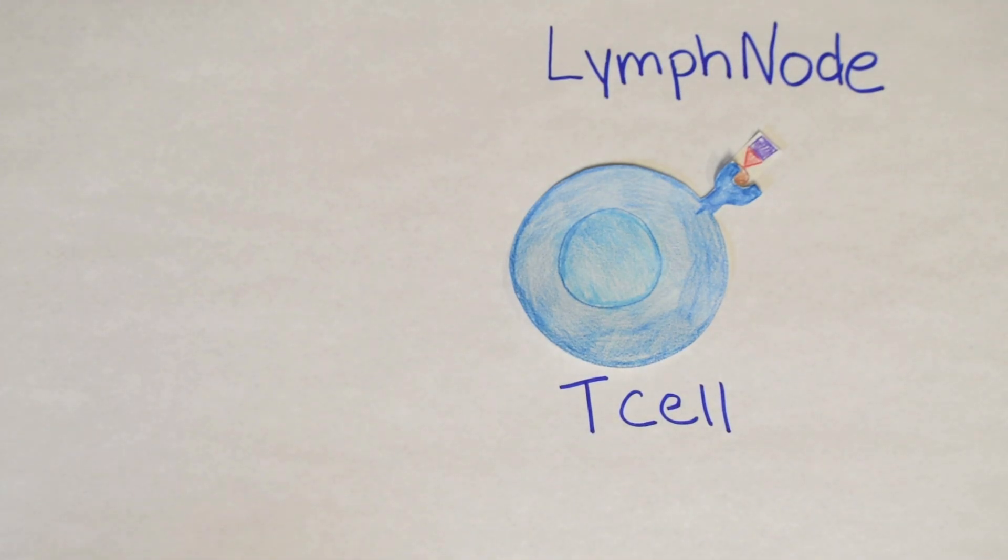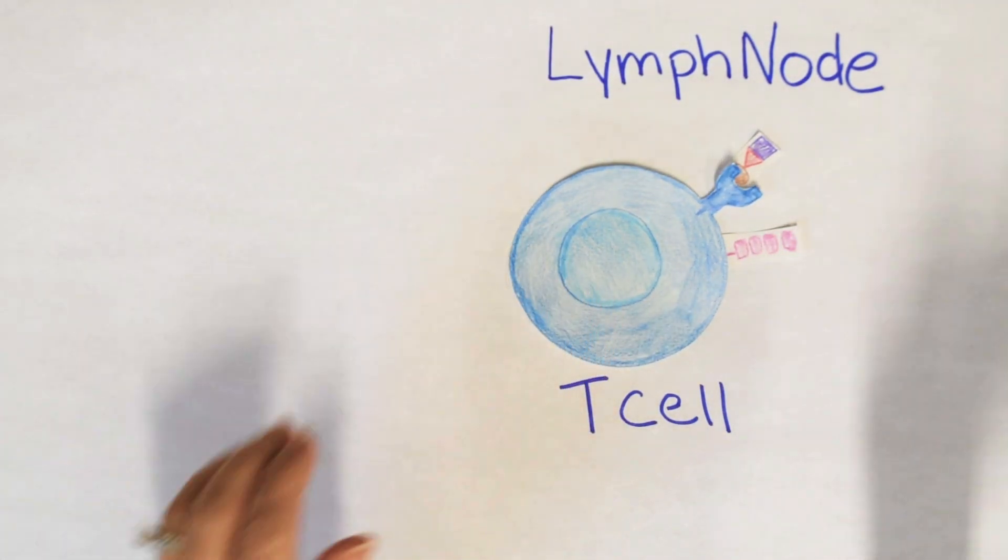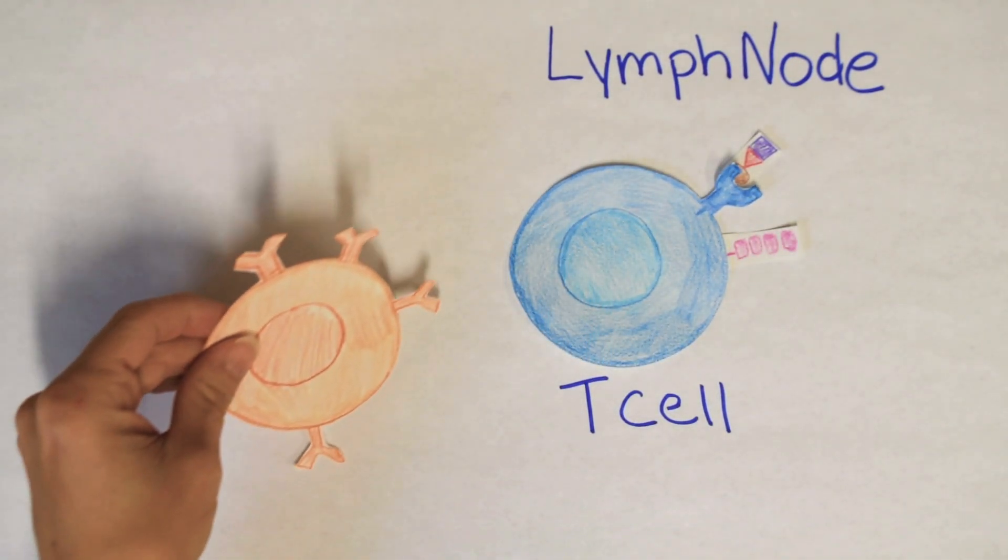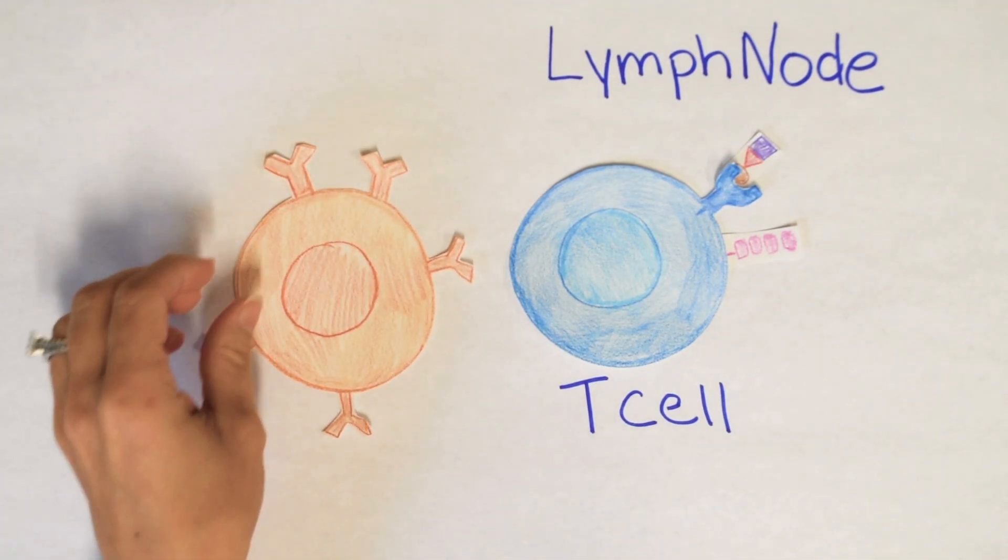The macrophage exits, and then the T cell has another job to do. T cells can fight bacteria and viruses both directly and indirectly. I'm making it activated. So when they fight directly and indirectly, it's helpful, but it's the best.